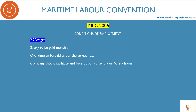Third point: the company should facilitate and provide an option to send your salary home. In the old days it was a big challenge — you had to take cash on board and find a bank, Western Union, or some agency and transfer money home yourself, which was painful and wasted precious time. Companies should have an option where you can directly request an allotment and they send it home. Most importantly, they should not charge you for it.